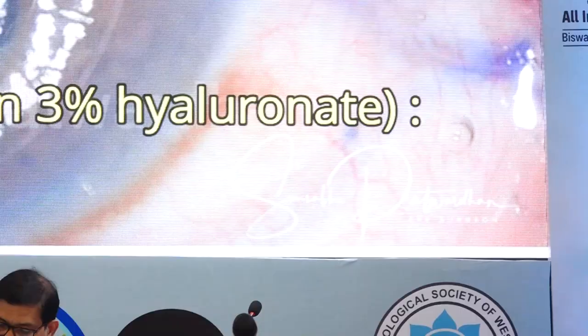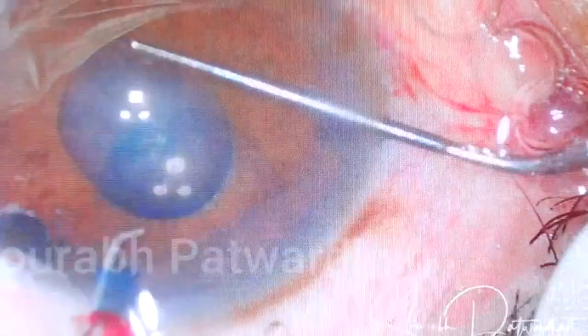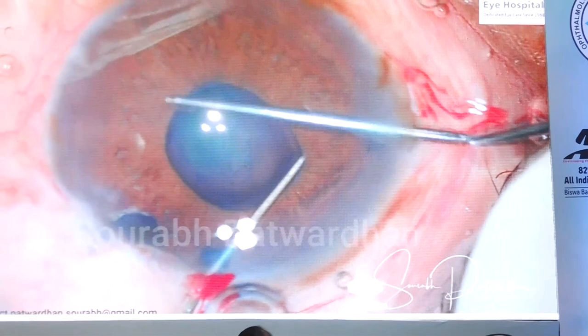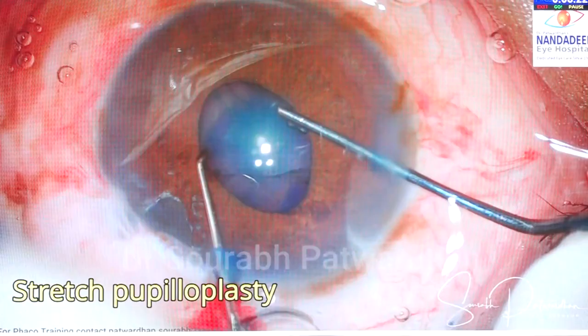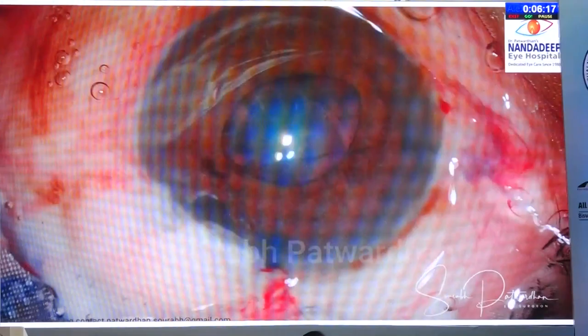To stain the anterior capsule under the iris when the pupil is small to begin with — if you just stain in the central area, the periphery remains unstained and you may have trouble while doing rhexis. So stain under the capsule and then use heavy dispersive OVD. My choice is Hylucote. With a rigid pupil, before using BHEX it is better to do a little stretch pupilloplasty and then put the BHEX ring inside.